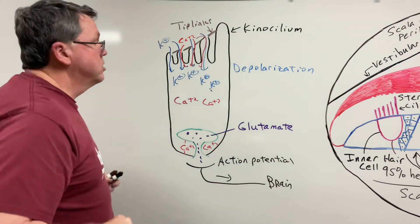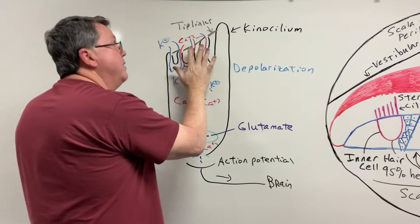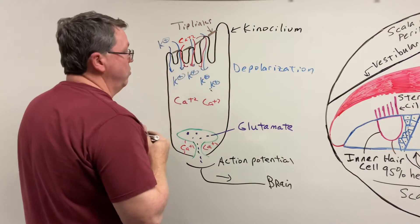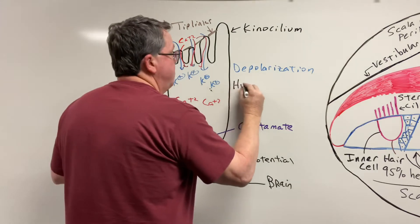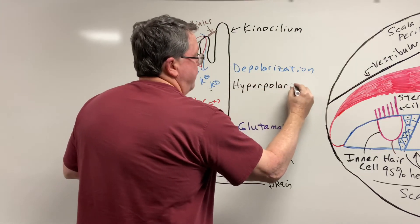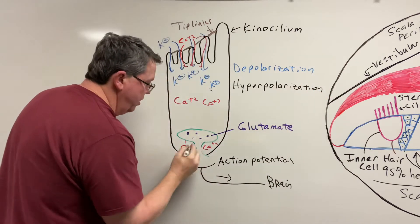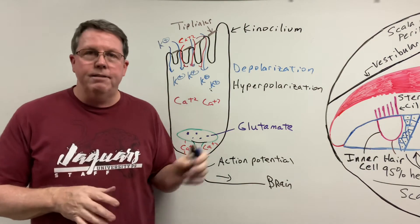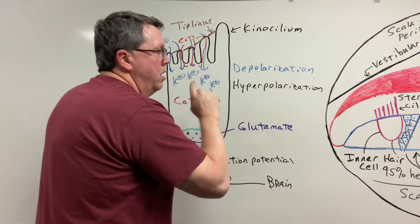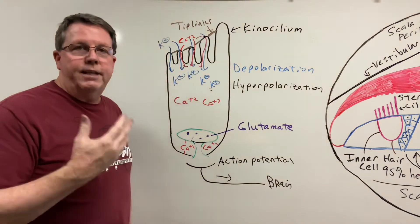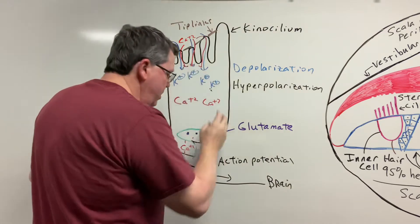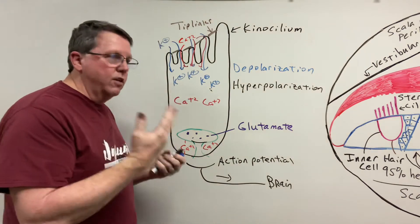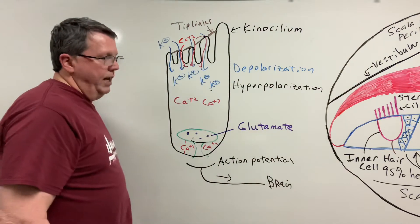But there's more. If the stereocilia move away from the kinocilium, those gates close, calcium stops rushing in, and we get hyperpolarization, stopping signals to the brain. Technically, signals are being sent to the brain all the time. When the stereocilia bend forward, the rate of signals increases and the brain interprets that as hearing a sound. When they go backward, the impulse rate decreases, and the brain interprets that in another way.